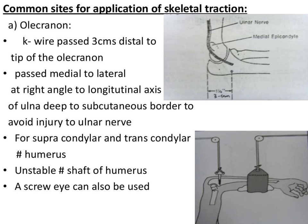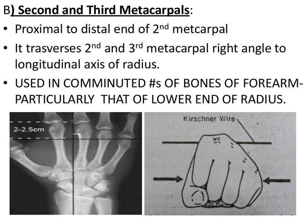For the olecranon, the insertion point is 3 centimeters distal to the tip of the olecranon. Similar to the upper end of tibia, there is a specific direction to follow: the pin must be passed from medial to lateral direction to avoid injury to the ulnar nerve. For the metacarpals — not very commonly applied — the pin is applied through the second and third metacarpals, 2 to 2.5 centimeters proximal to the metacarpophalangeal joint.